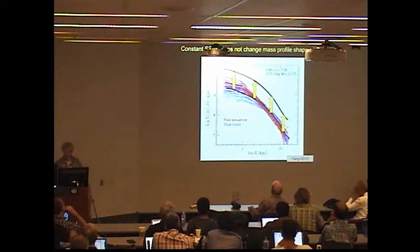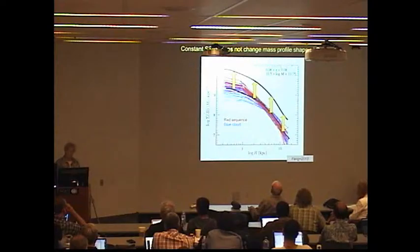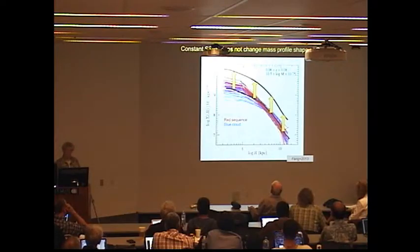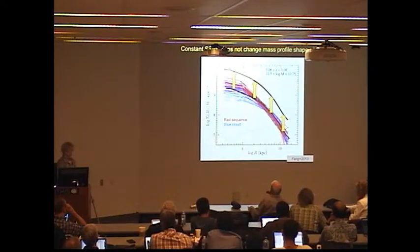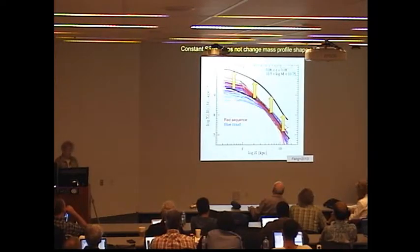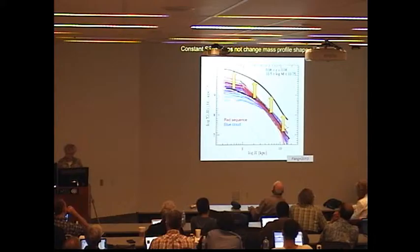A good way of thinking about the way galaxies assemble their mass is to think about specific star formation as a function of radius. If that is constant, then the radius of the galaxy isn't changing. The only thing that's happening is that the surface density is increasing by the same amount at all radii. You can think of a galaxy with constant specific star formation versus radius as one that is neither growing inside out or outside in.